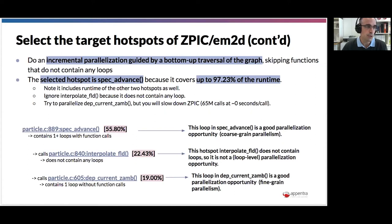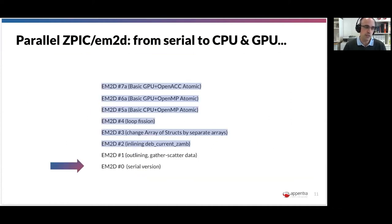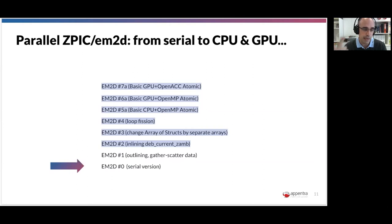We will concentrate on spec_advance and one single loop. The journey goes: serial version, then versions one through four. All these versions work on changing the serial code — not parallelism yet. This is stage one: preparing the code for parallelism, applying techniques that experts in parallel and GPU programming use in real applications — particularly inlining functions, outlining functions, gather-scatter of sparse data into consecutive arrays, changing array of structs to separate arrays, and loop fission. These techniques are useful for multi-threading, GPU programming, and SIMD vector programming.